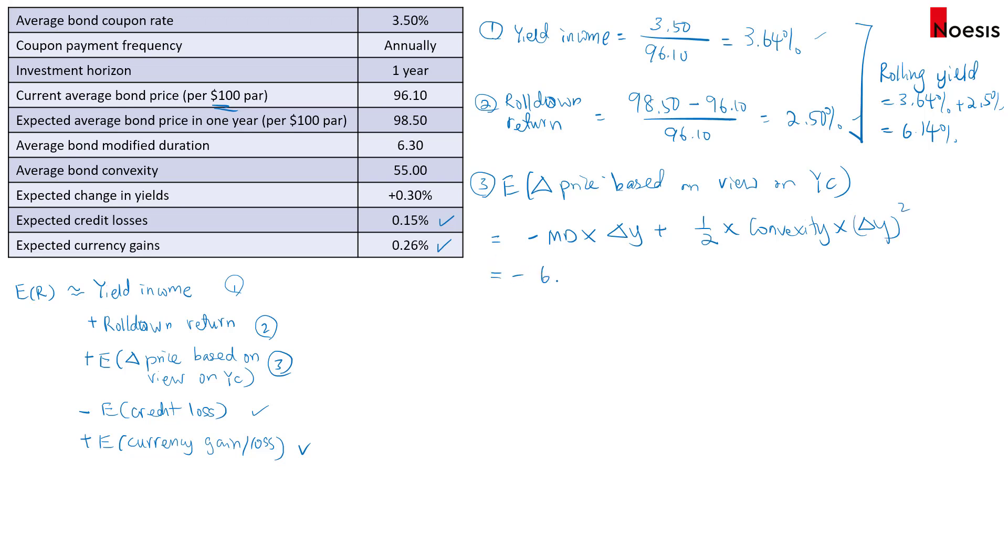So we have the modified duration as 6.3. The change in yield, if I express it in decimal places is 0.003 plus half times the convexity 55 times change in yield, 0.003 squared. So if you compute this, this will be about negative 1.87%.